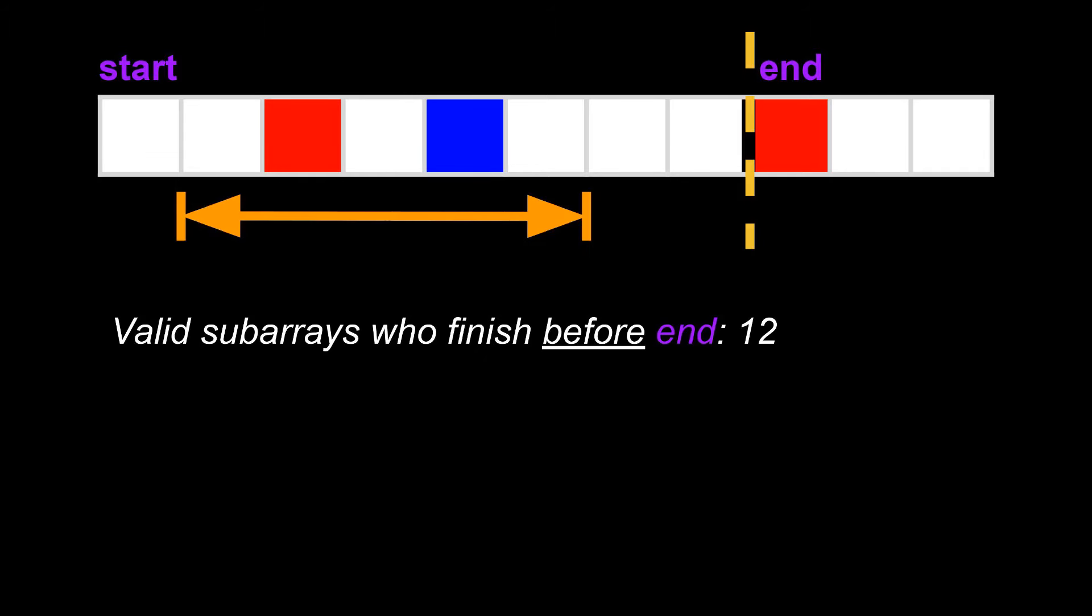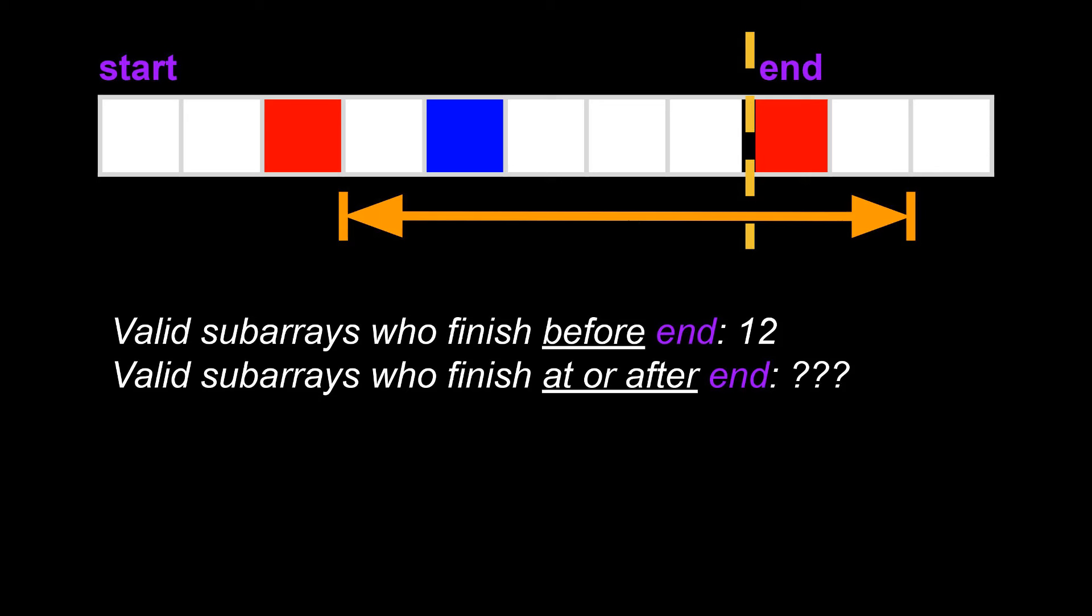What if there was more than one red or one blue in the segment? Specifically, if end was not on a black square but was on, say, a red square and the segment continues on. Well, in that case, we already know how many valid subarrays are there who finish before the current end position. There are 12 of them. All we have to do is to add the number of subarrays who finish at or after the end index. How will we do that?